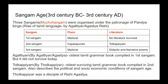Tolkapiam was the oldest surviving Tamil grammar book, compiled in the second Sangam. Although it was a Tamil grammar book, it also described the political and socio-economic conditions of the Sangam age. Tolkapiam was a disciple of Rishi Agastya.